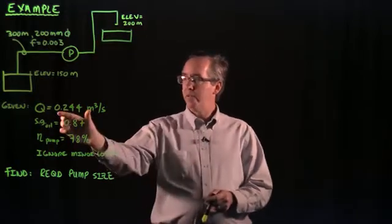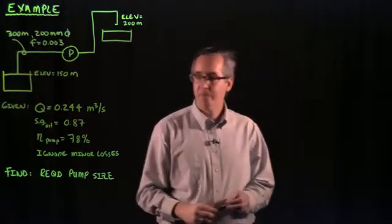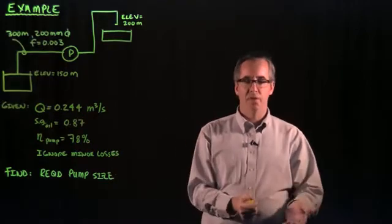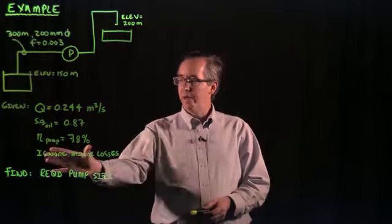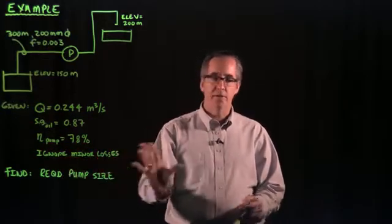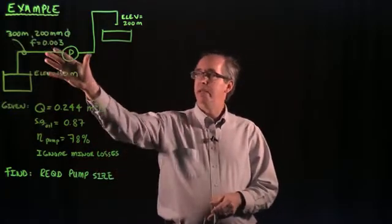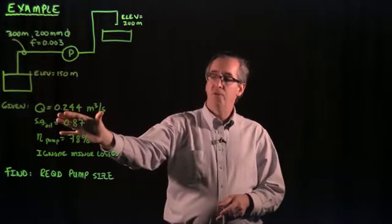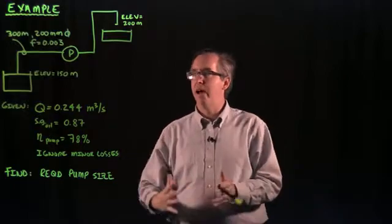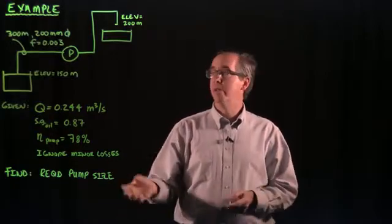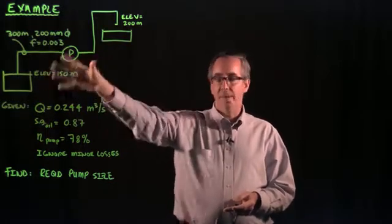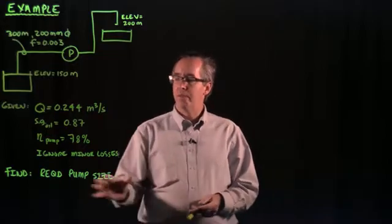We're given the flow rate that's required of 0.244 cubic meters per second. It's an oil with a specific gravity of 0.87, so it's roughly 87 percent the weight of water. We're given a pump efficiency of 78 percent and in this problem we're going to be ignoring the minor losses. Essentially what we're assuming is that with the length of the pipe and the large flow that we have, our friction losses are going to govern. So let's go ahead and get started.